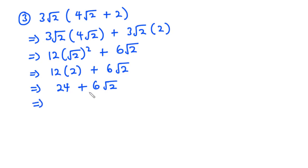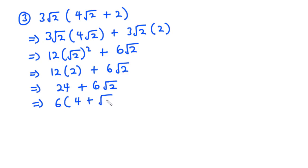Now we can factor out 6. So we have 6 outside the bracket. Inside the bracket, 24 divided by 6 is 4, and 6 divided by 6 is 1, so we have 1 times root 2, which is root 2. So the final answer is 6 times the quantity 4 plus root 2.